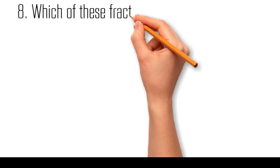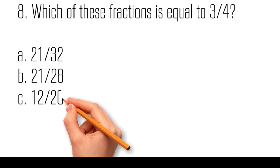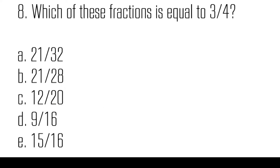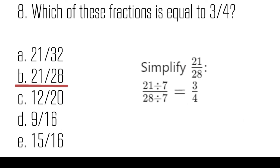Which of these fractions is equal to three-quarters? Twenty-one thirty-seconds, twenty-one twenty-eighths, twelve-twentieths, nine-sixteenths, fifteen-sixteenths. Simplify each choice: twenty-one over twenty-eight — divide both numerator and denominator by seven — it is equal to three-quarters.